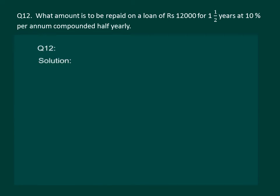Let us read the next question on the slide. It says: what amount is to be repaid on a loan of rupees 12,000 for one and a half years at 10% per annum compounded half yearly? This is an example based on interest compounded half yearly.